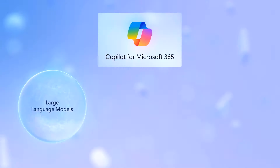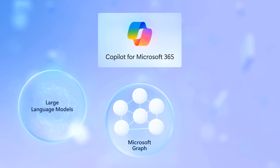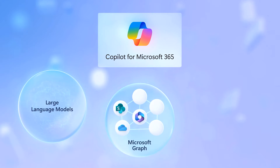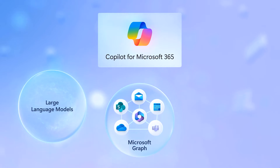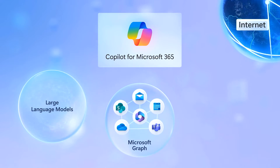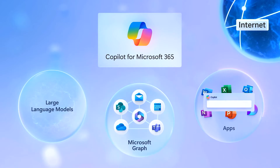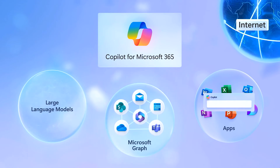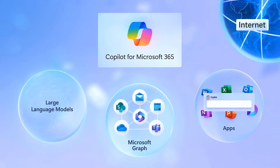How does Copilot for Microsoft 365 work? It comprises large language models and the Microsoft Graph, which includes the ability to reach data in Microsoft 365 — places like SharePoint, OneDrive, email, calendar, and Teams — to ground your prompts, use the internet, and present that information back to you in your app. It's far more sophisticated than a simple generative chat AI window inside your Office apps.